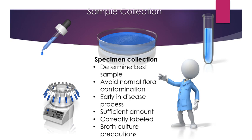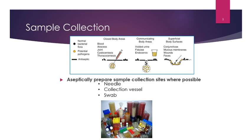We also want to sample the bacteria or fungus early in the disease process. A lot of people hesitate to do that and just want to treat with antibiotics and antifungals without doing a culture because it might be cheaper. But in the long run it's typically cheaper to run a culture, get the appropriate antibiotic, and get that animal on it as soon as possible. Make sure you have the right amount of sample so it can be grown out easily. In some cases we have to grow things on a broth culture, and there are precautions to discuss with your lab.